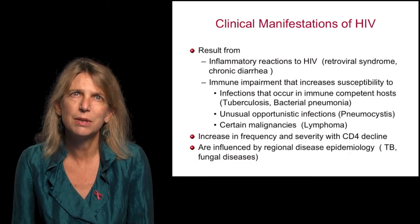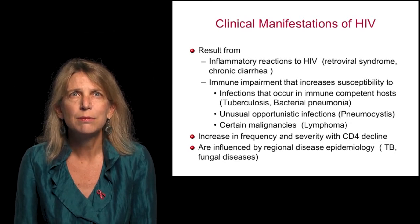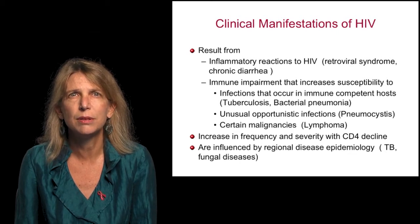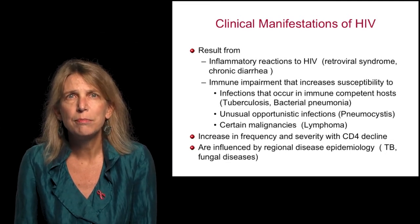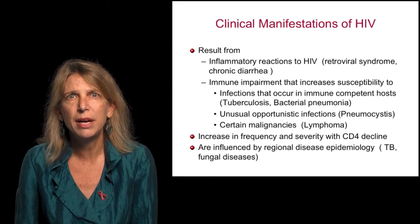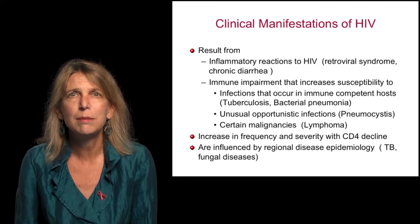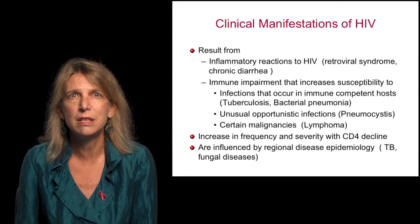How does a patient with HIV present? The clinical manifestations of HIV can result from inflammatory reactions due to HIV, such as the retroviral syndrome and chronic diarrhea. The most apparent and dramatic manifestations of HIV are due to immune impairment that increase susceptibility to infections in immune-competent hosts, such as tuberculosis and bacterial pneumonia, to unusual opportunistic infections such as pneumocystis, and to certain malignancies such as lymphoma.